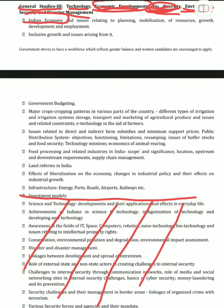First of all we have to know about the Indian economy — its history, geography, everything about India and its economy, the five year plans and what the economic status was. When there is a question on the economic status of Indian society from the colonial period, that is a part of history but also falls under Indian economy. Then we have issues related to planning, mobilization of resources, growth, development and employment — all separate topics. We also need to understand the difference between growth and development.